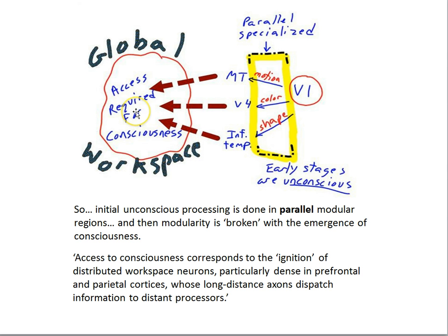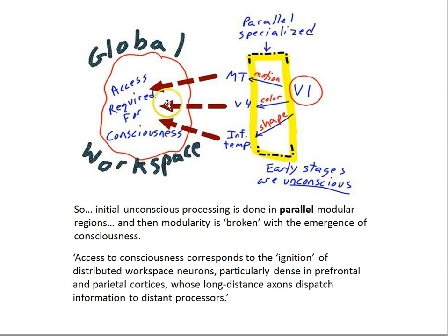That's when we get the emergence of conscious awareness of the stimulation. Dehaene argues that the modularity typical of early sensory and perceptual processing is broken with the emergence of consciousness, because the frontal cortex systems are now able to share that information back to the other perceptual areas and other parts of the brain — to broadcast what it is that has achieved consciousness. Here's a quote from him: 'Access to consciousness corresponds to the ignition of distributed workspace neurons, particularly dense in prefrontal and parietal cortices, whose long-distance axons dispatch information to distant processors.'